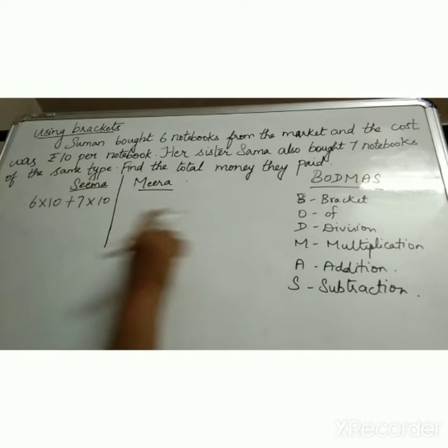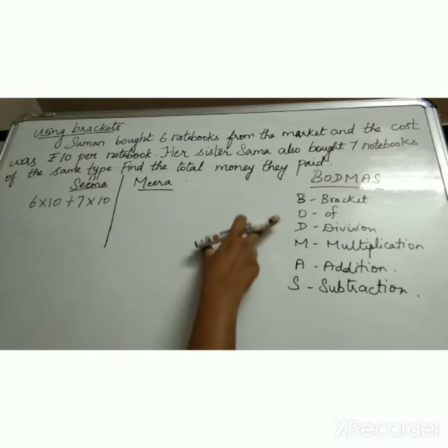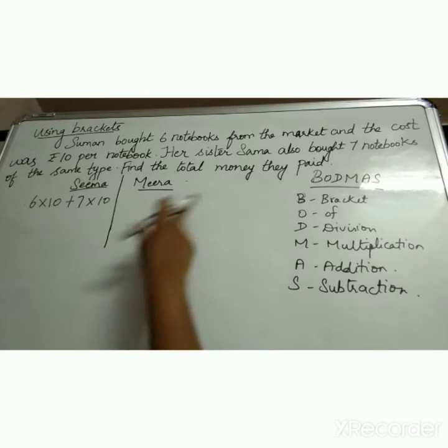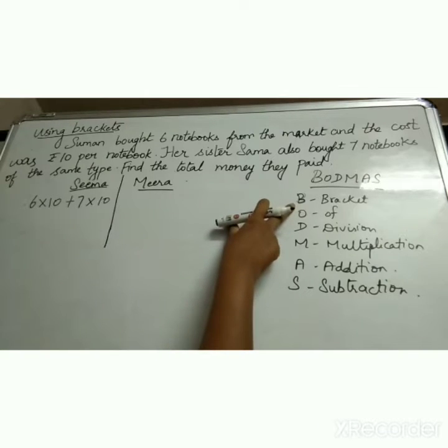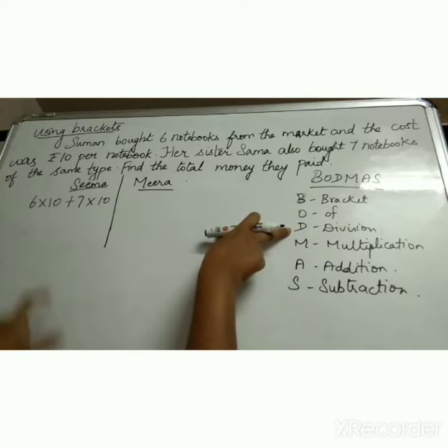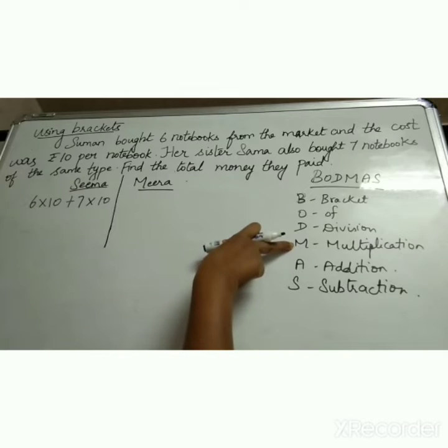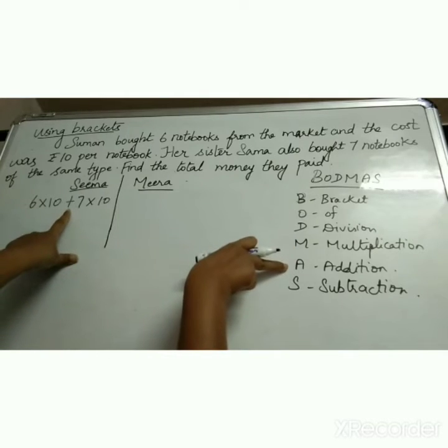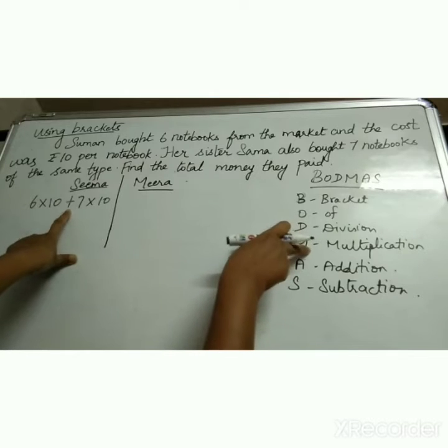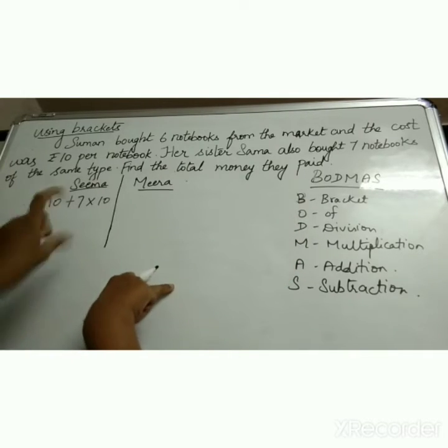So as I told in BODMAS, first you have to, if there is bracket, you will remove the bracket first. Then if you have division sign, you will do that first. But here you have multiplication first. Multiplication, then only comes addition. So then only you have to add. So first comes multiplication, so we have to multiply this first.